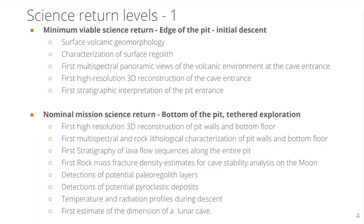The minimum viable science return level consists of reaching the edge of the pit and performing an initial descent. While this, we study the surface volcanic geomorphology and characterize surface regolith. We perform a first multispectral panoramic view of the volcanic environment at the cave entrance and the first high resolution 3D reconstruction of the cave entrance. We carry out a first stratigraphic interpretation.